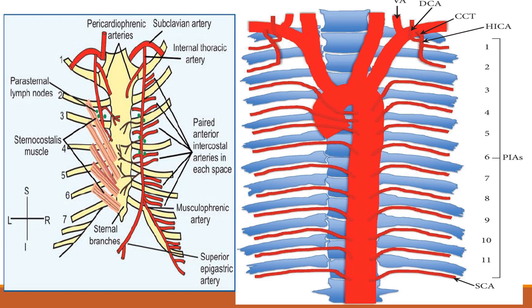I hope everyone understood why the first two rib spaces are spared and only the third to ninth are involved in a case of coarctation of the aorta. Thank you.